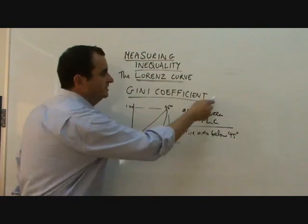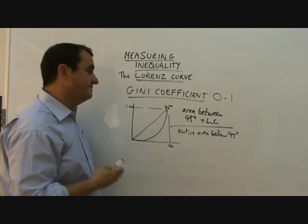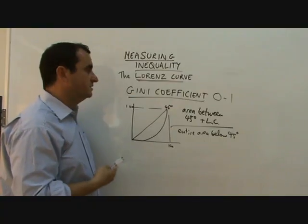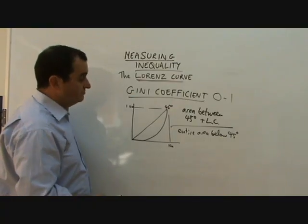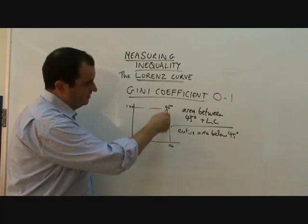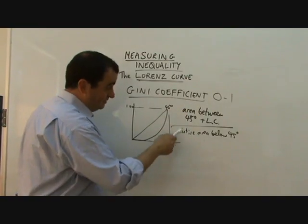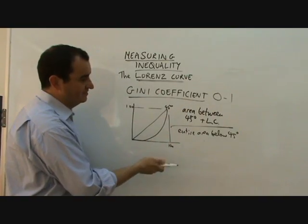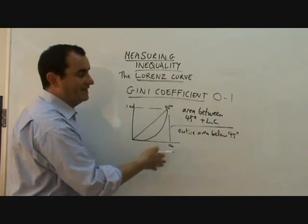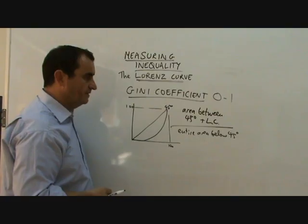So, the Gini coefficient, which can be read between zero and one, close to zero would mean very equal distribution of income. If, however, it was a very unequal distribution of income, and the Lorenz curve was really a long way from the 45 degree line, then that area would almost be equal to the entire area below the 45 degree line, and this Gini coefficient would calculate to being very close to one, and that would imply a very unequal distribution of income.